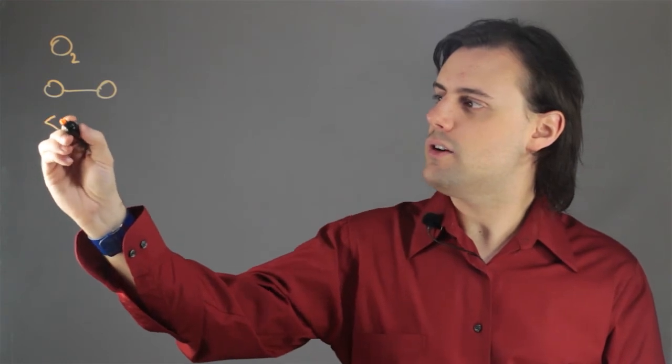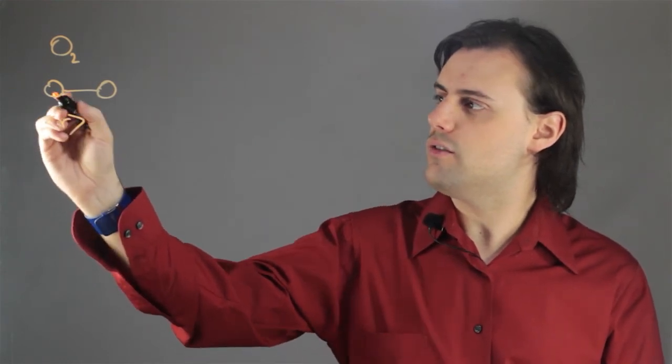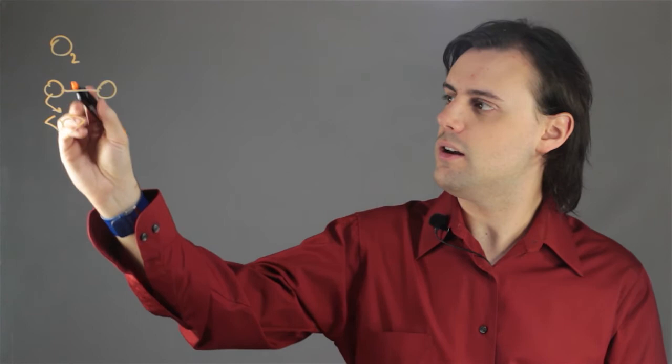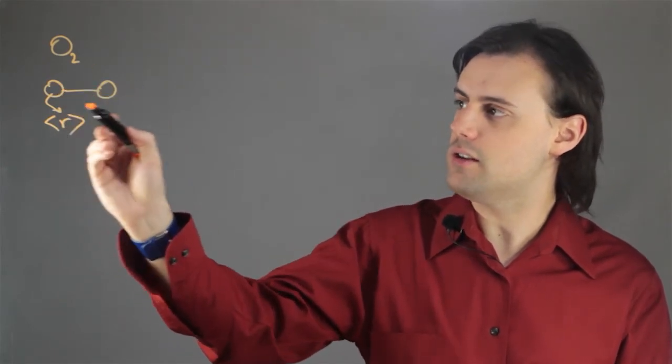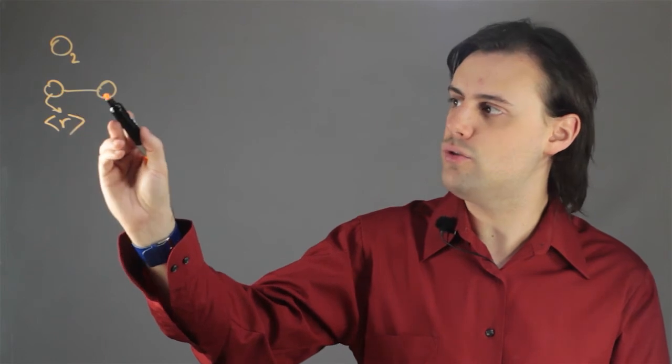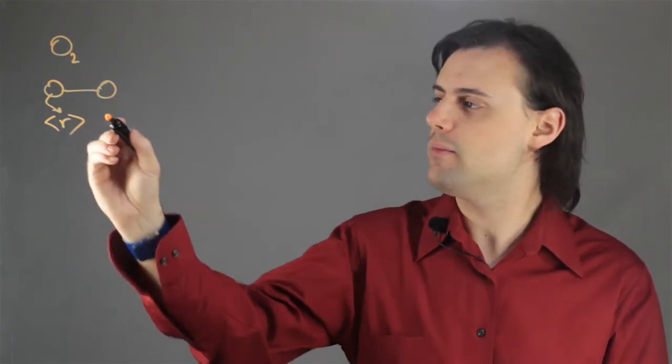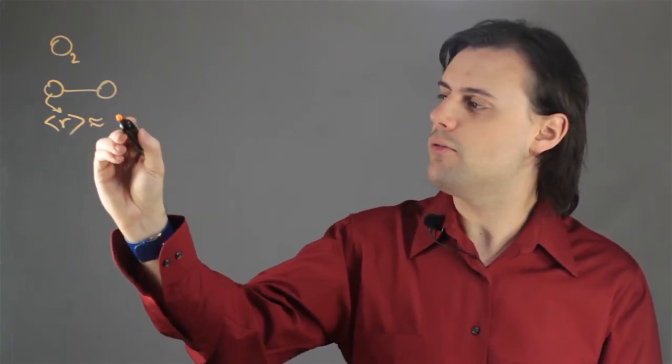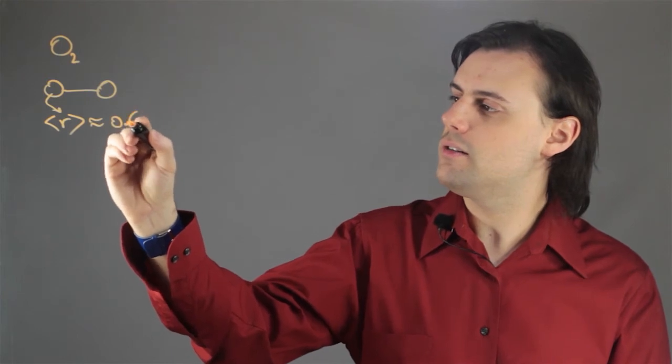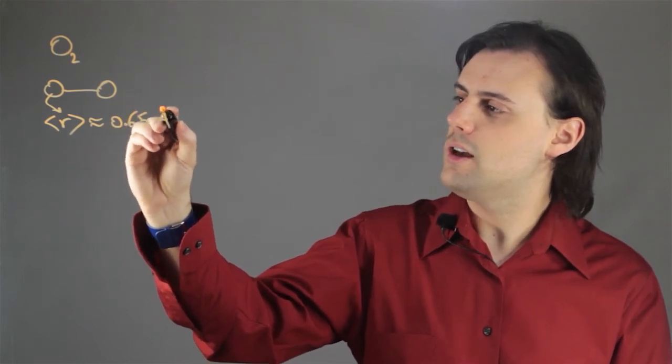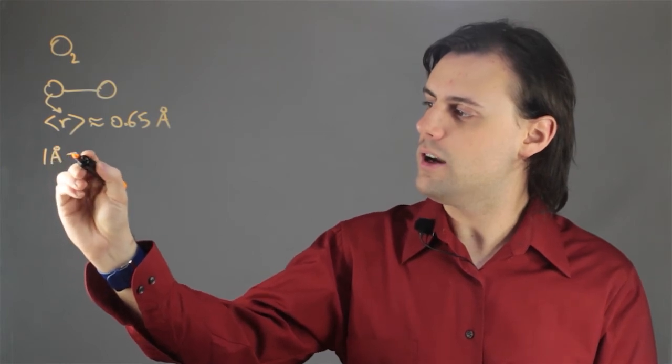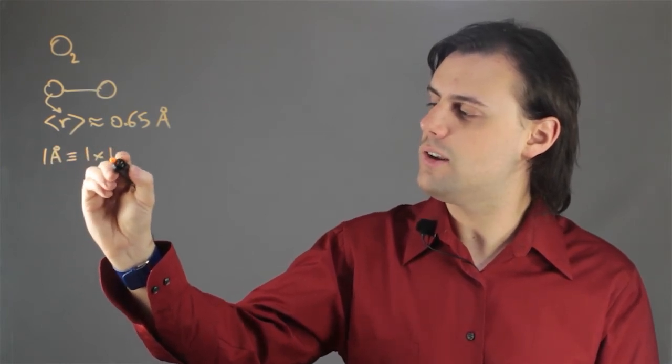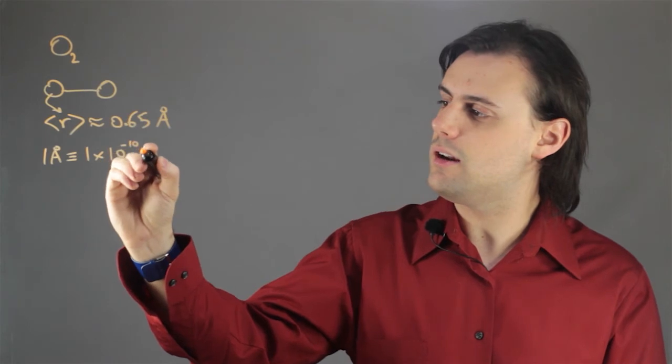the average radius of a single oxygen atom defined in terms of the scenario in which you have two atoms bonded to each other is approximately equal to 0.65 angstroms, in which one angstrom is defined as 1 times 10 to the negative 10 meters.